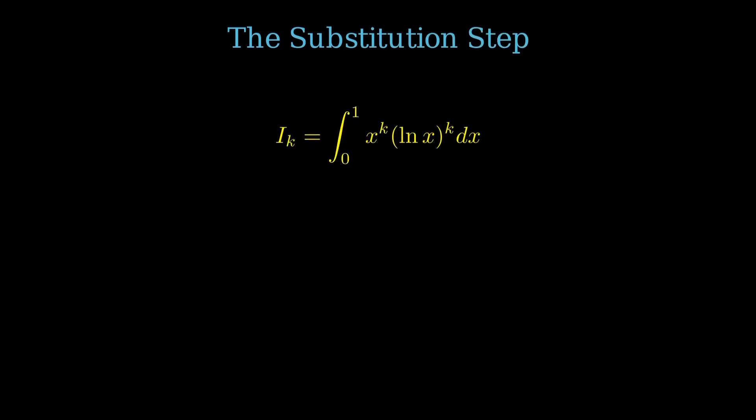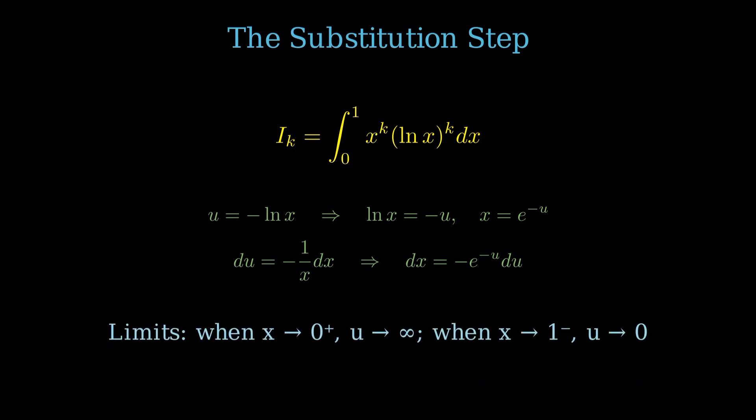The integral from 0 to 1 of x to the k times natural log x to the k. Let u equal negative natural log x. This means natural log x equals negative u, so x equals e to the negative u. For the differential, du equals negative 1 over x dx, so dx equals negative x du equals negative e to the negative u du.